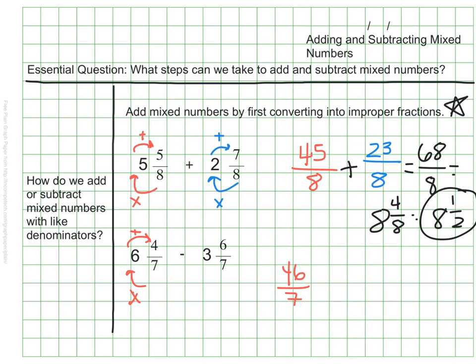The mixed number 6 and 4 sevenths is equivalent to 46 sevenths, and 3 and 6 sevenths is equivalent to 27 sevenths. Since they have the same denominator, I can just subtract my numerators. The difference between the two fractions is 19 sevenths.